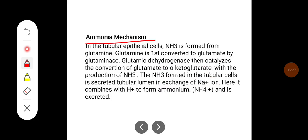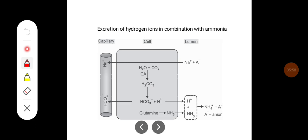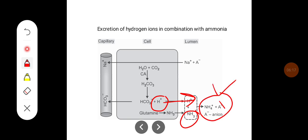The ammonia mechanism: in tubular epithelial cells, NH3 is formed from glutamine. Glutamine is first converted to glutamate by glutaminase. Glutamic dehydrogenase then catalyzes the conversion of glutamate into alpha-ketoglutarate with the production of NH3. The NH3 in the tubular cells is secreted into the tubular lumen in exchange for sodium, where it combines with H+ ions to form ammonium (NH4+), which combines with an anion and is excreted in the urine, thus removing one H+ ion.